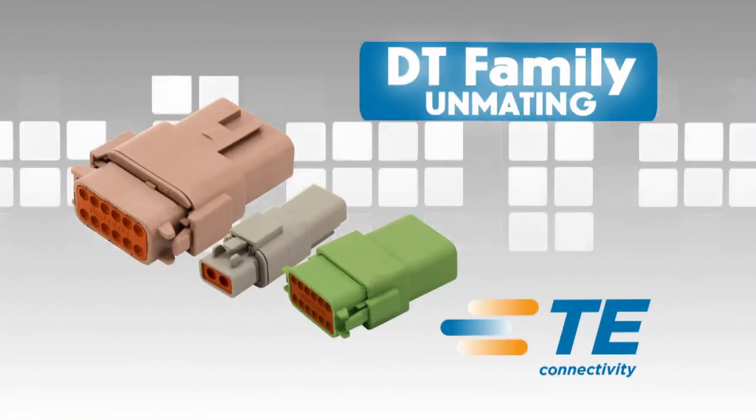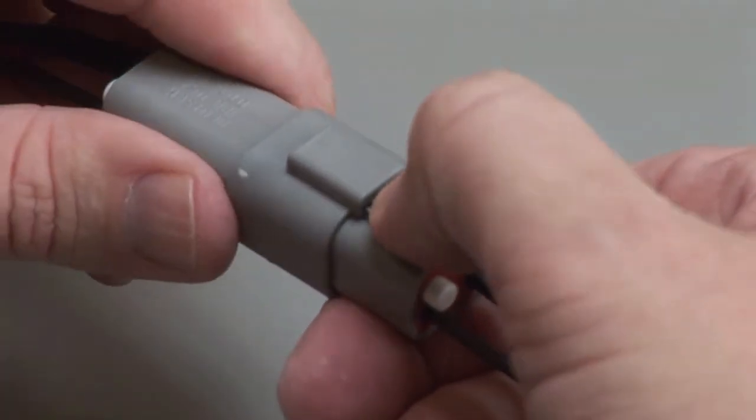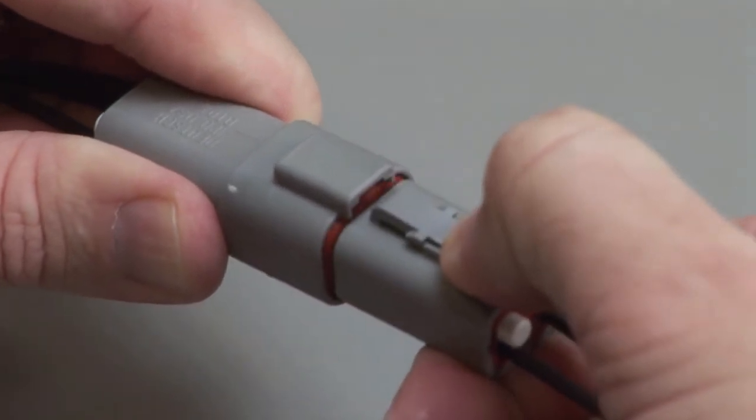DT unmating. To unmate a DT series connector, depress the locking latch on the outside of the plug while pulling the plug and receptacle apart.